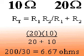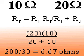Let's look at an example. If two resistors of 10 ohms and 20 ohms are connected in parallel, what is the total equivalent resistance? From our previous equation, we know that RT equals R1 times R2 divided by R1 plus R2, which in our example equals 20 times 10 divided by 20 plus 10, or 200 divided by 30, which equals 6.67 ohms.